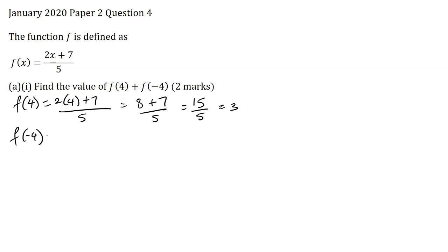Now f of minus 4 is equal to 2 times minus 4 plus 7 all over 5. This is equal to 2 times minus 4 is minus 8 plus 7 all over 5. This is equal to minus 1 over 5.